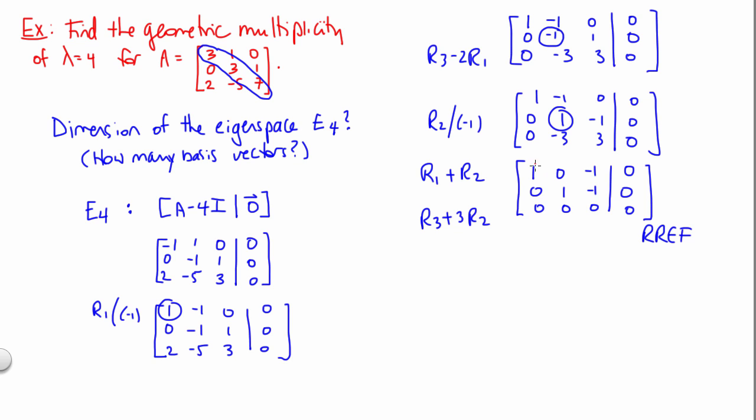Now to solve this system, we need to take a look at the leading 1s. So in the first row, there's our leading 1. In the second row, there's our leading 1. So overall, we've got two leading 1s in this matrix. The third column does not have a leading 1. Therefore, it's going to take a parameter value.